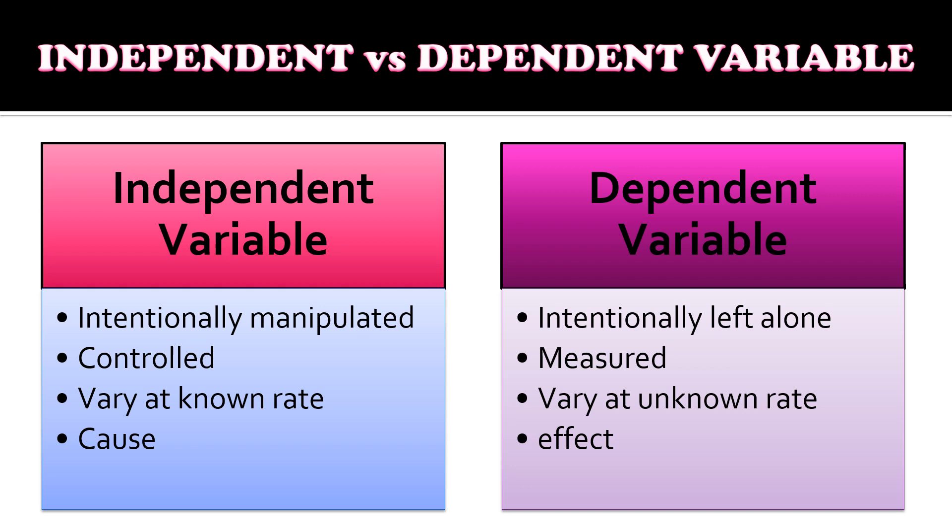Here is a summary comparing independent and dependent variables. Independent variable is intentionally manipulated while dependent variable is intentionally left alone. Independent variable is controlled and dependent variable is measured. Independent variable varies at a known rate, while dependent variable varies at an unknown rate. Independent variable is the cause and dependent variable is the effect.